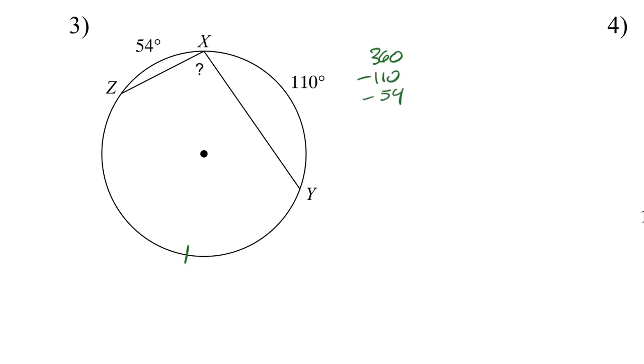And that's going to give me that this arc here is 196. So that means that the measure of angle XY equals to one half of 196. And that's going to give you 98 degrees.